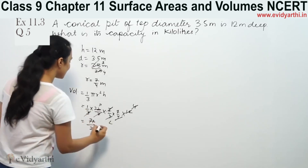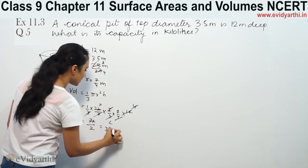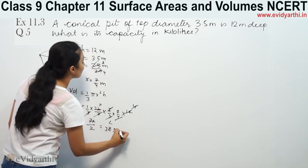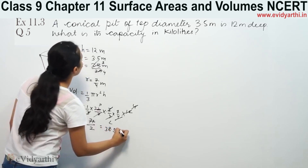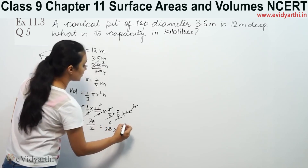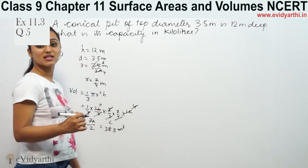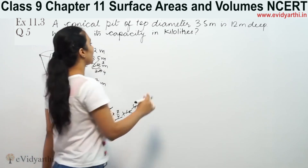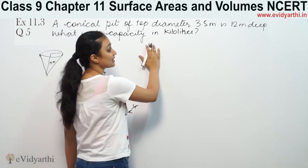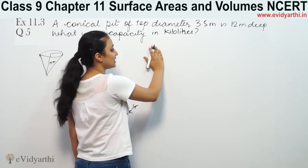77 by 2 equals 38.5 meter cube. So this is the volume. We need capacity in kiloliters.